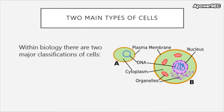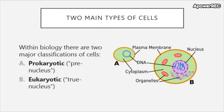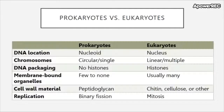Within biology there are two major classifications of cells: prokaryotic, from the words 'pre-nucleus,' and eukaryotic, from the words 'true nucleus.' Cells of microbes can be either of the two. Viruses are neither prokaryotic nor eukaryotic and we'll discuss them later in the course. Prokaryotes and eukaryotes can be divided amongst other traits as well, with DNA location being the most important. Prokaryotes contain a nucleoid — meaning nucleus-like — an irregularly shaped region within the cell containing all or most of the genetic material, called the genophore.